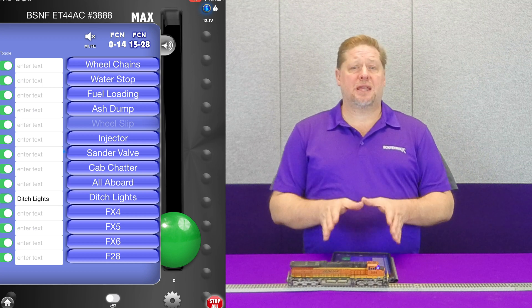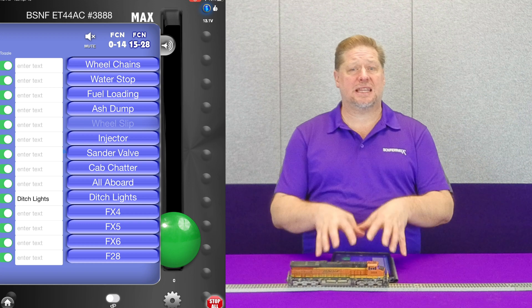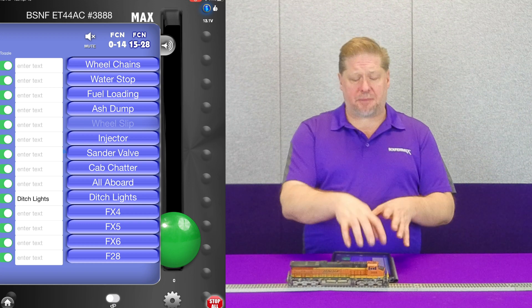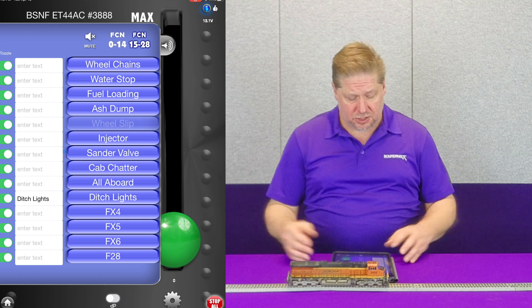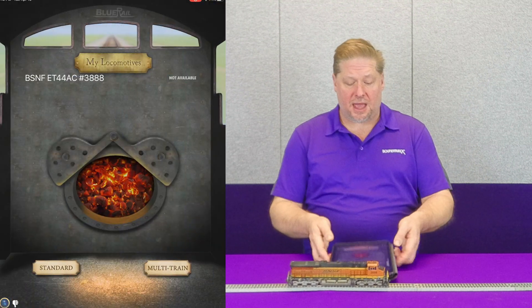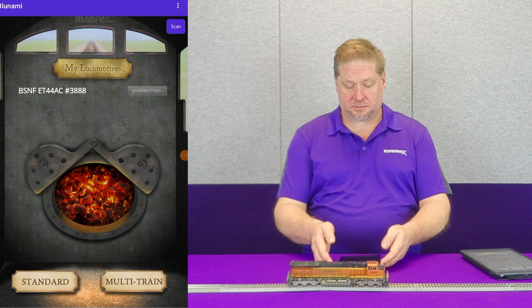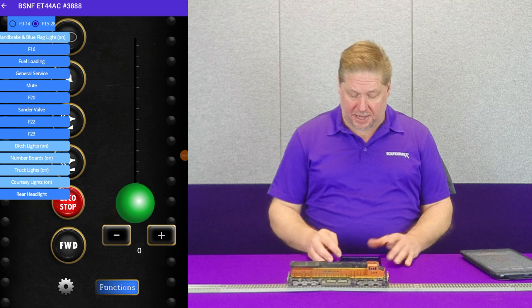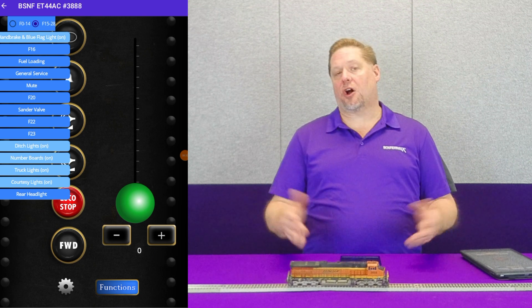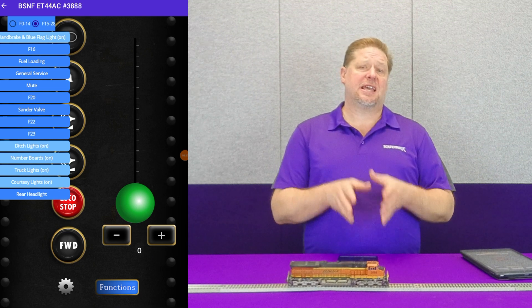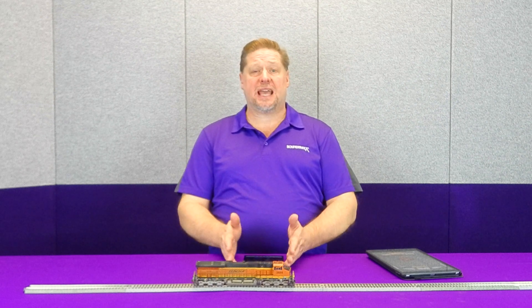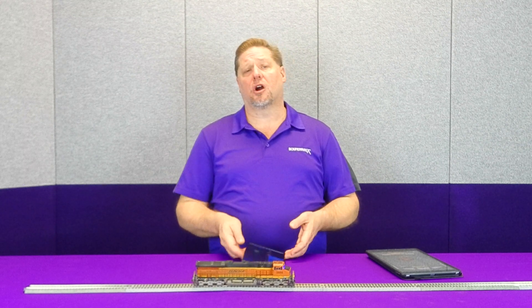The biggest thing to remember is that when you're making changes to the names of these functions, you're making the changes in the app. Anytime the app connects to this decoder, the app settings will pull up including the function names you've assigned. Going back to our Android tablet and reconnecting — when we open the function panel and go to 15 to 28, all the names are still there matching the locomotive. The data stays in the app, and as long as you store that information — whether Apple or Android — the app retains it and ensures those names are there whenever you're connected to that particular locomotive.